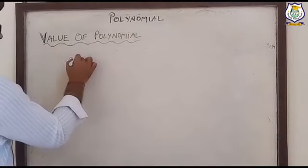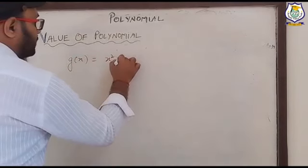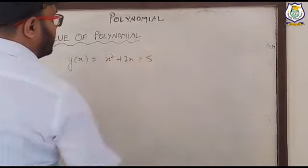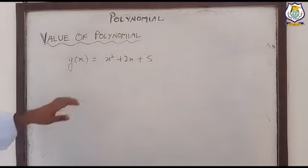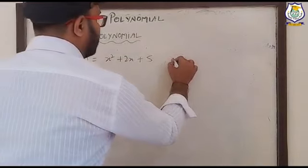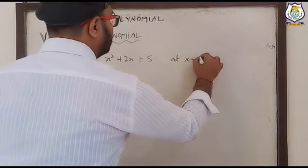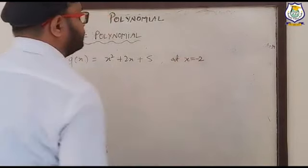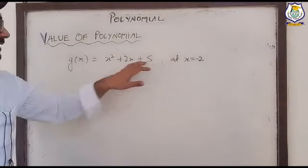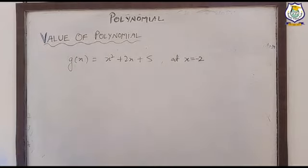Next example: polynomial g(x) equal to x squared plus 2x plus five. Now find the value of this polynomial at x equal to minus two.